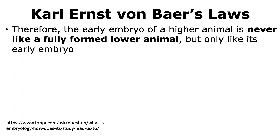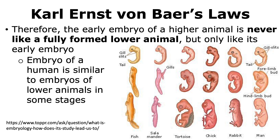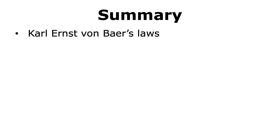What will happen is that the human embryo will undergo its own stages of development, and hence the embryonic stages will depart more and more from lower animals in the later stages of development. The fourth law builds on the third law and states that the early embryo of a higher animal is never like a fully formed lower animal, but only like its embryo. Thus, the embryo of a human is similar to embryos of lower animals in the early stages, as we can see in this figure, where we can compare the development of different types of vertebrates and how they look very similar in the early stages. However, more specialized features appear as development progresses, and they never form a fully formed lower animal, but their embryonic stages look similar to those.